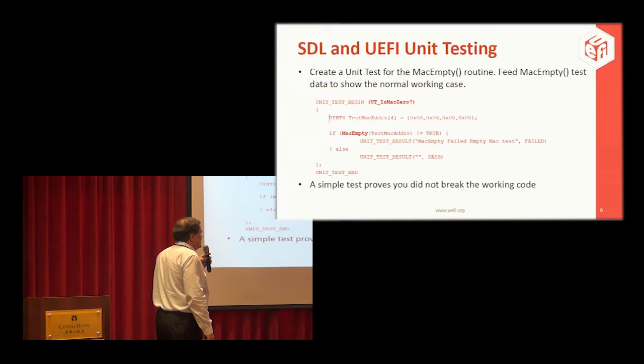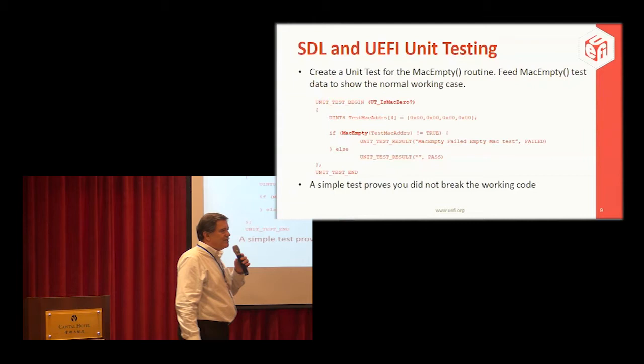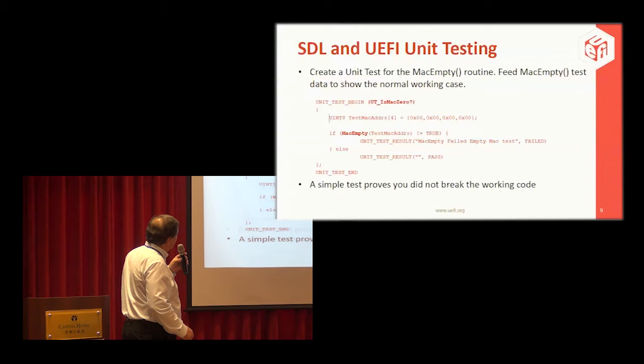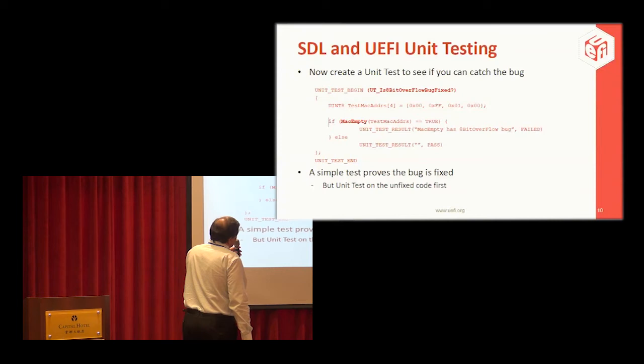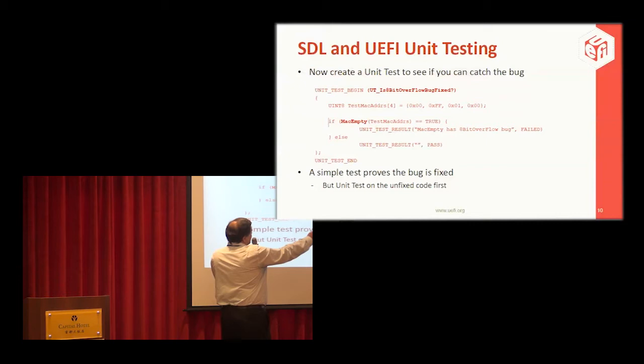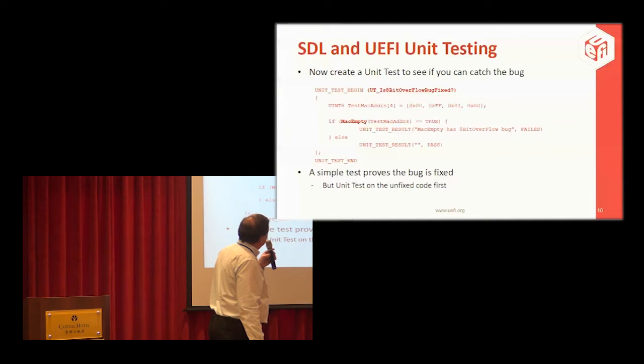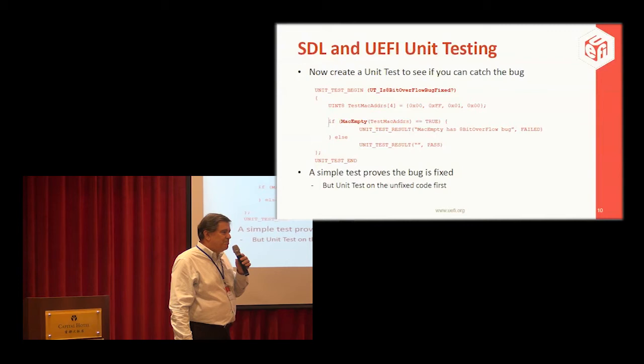This simple test proves you did not break the working code — that's where you need to start with every single unit test. Make sure the working code isn't broken. Then we add another test for the bug: is the 8-bit overflow bug fixed? We give it an argument of 0xFF and 0x01 to make sure it overflows. If working, it'll say the field is not empty, confirming the bug has been fixed.